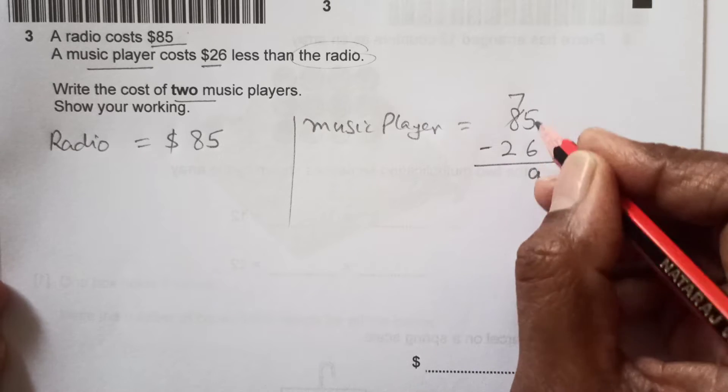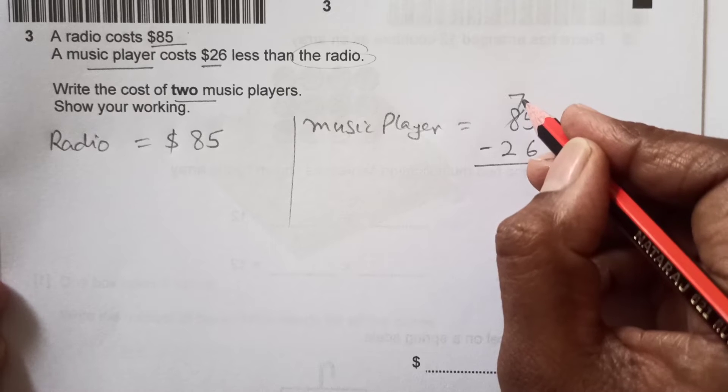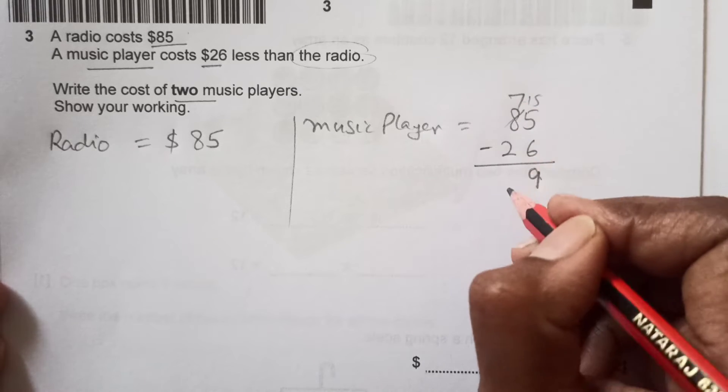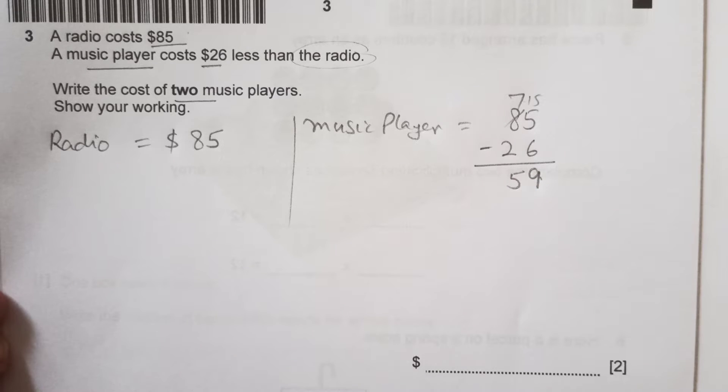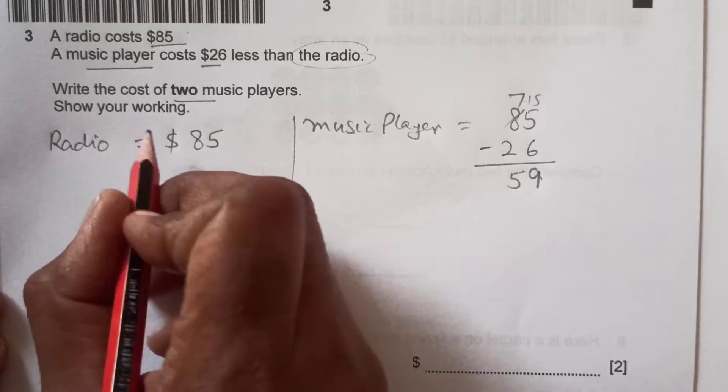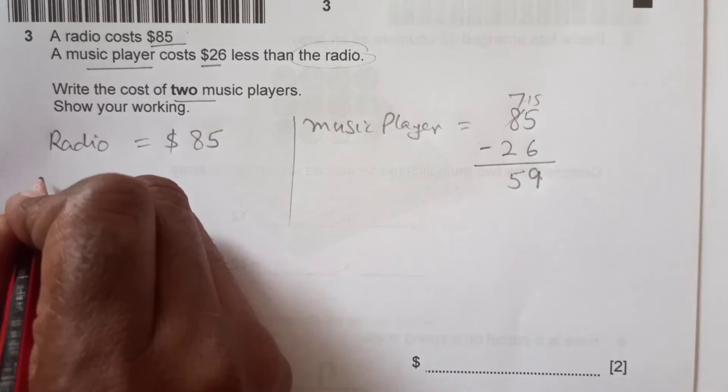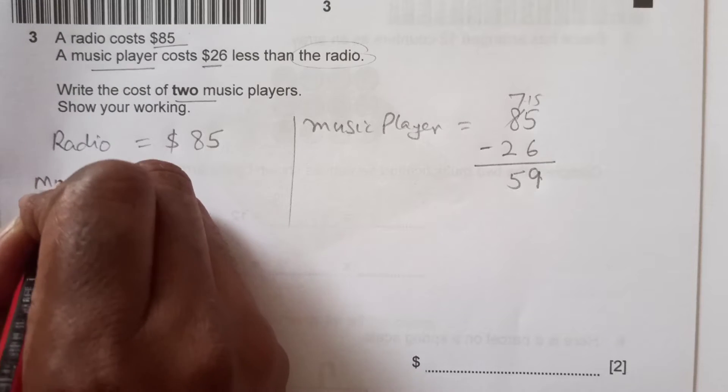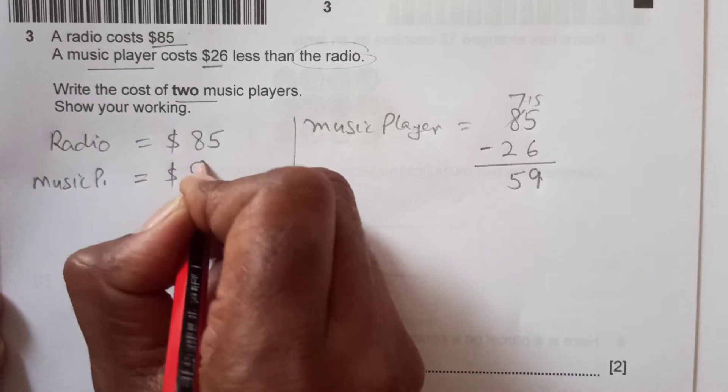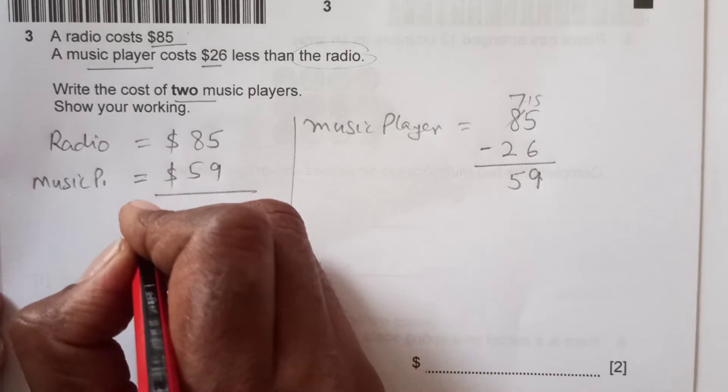15 minus 6 is 9. Here is 7 because one goes here as a carry, so $59 is the cost of the music player. We are looking for the total cost of two, so cost of music player is $59. Now you add them together.